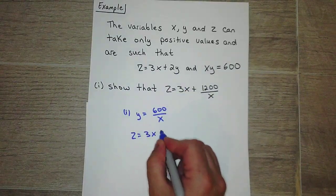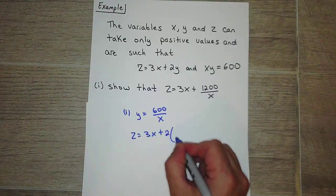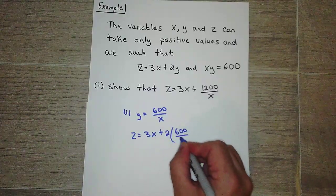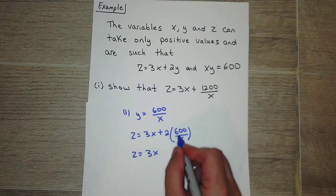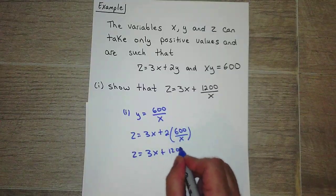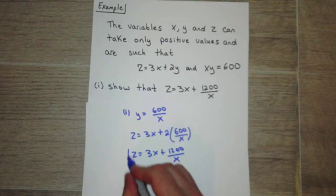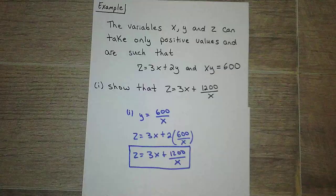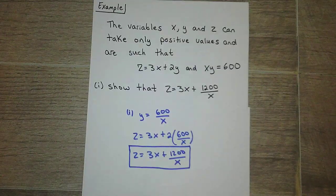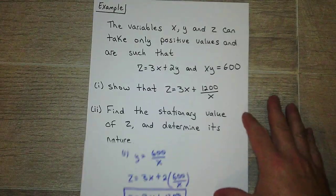Okay, so xy equals 600. I'm just going to divide by x and I get that for y. I'm going to take this and replace this y with 600 over x. So I get z equals 3x plus 2 times 600 over x, which is just simply distributing the 2, giving 1200 over x. Okay, so pretty simple, especially for an H problem.